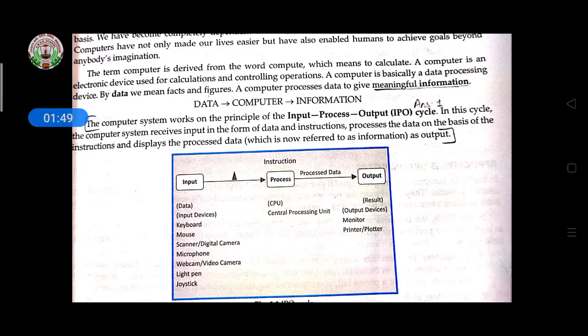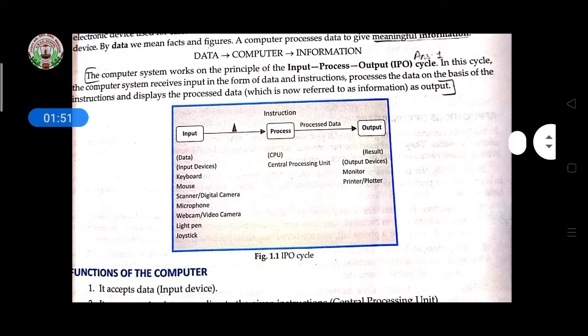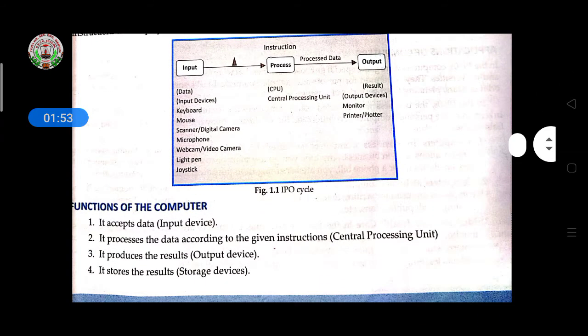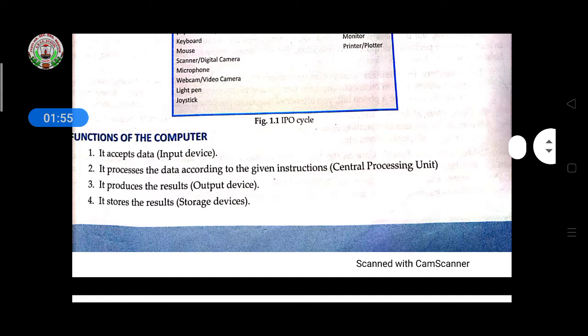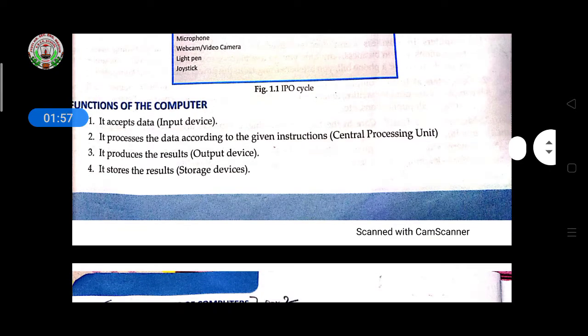Functions of the computer: It accepts data with the help of input device, it processes the data according to given instructions in central processing unit, it produces the result in output device, and then it stores the result in storage device.